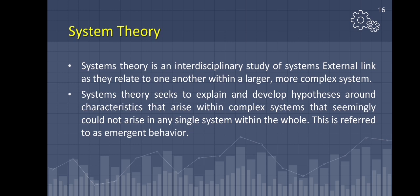Characteristics that seemingly could not arise in any single system within the whole - this is referred to as emergent behavior. When a complex system exhibits emergent behavior, it indicates that this feature exhibits traits that do not appear on their own.